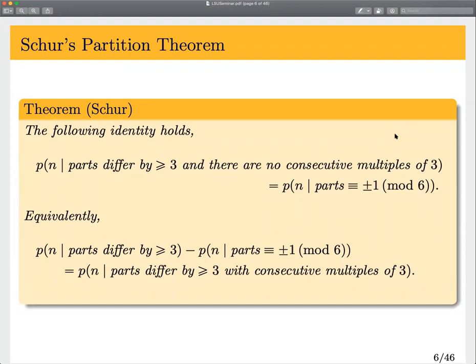We're trying to build a pattern. The theorem of Schur: if we count partitions into parts that differ by at least three without consecutive multiples of three, that equals the number of partitions of n into parts plus or minus one mod six. Another way of looking at that is: if we take partitions of n into parts differing by at least three, and subtract partitions into parts congruent to plus or minus one mod six, what we're left with is partitions whose parts both differ by three and contain consecutive multiples of three.